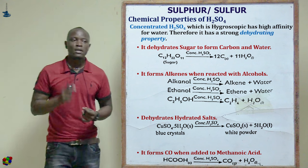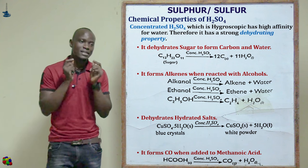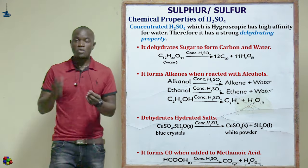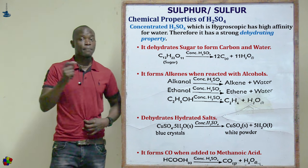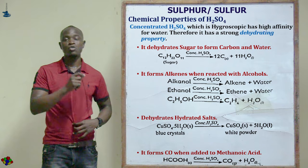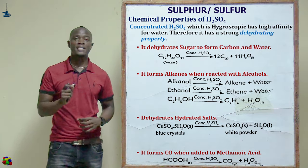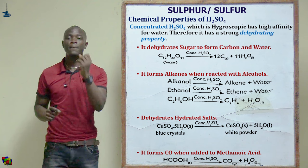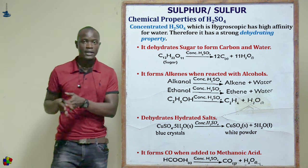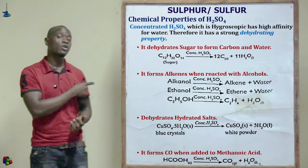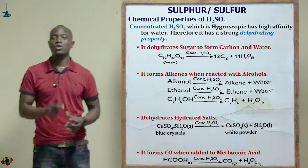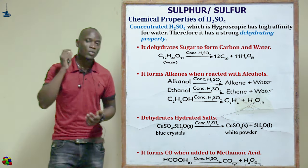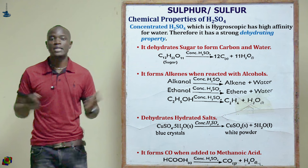When concentrated sulfuric acid is added to sugar, the sugar crystals turn from white to a black mass of carbon. This is because the concentrated sulfuric acid dehydrates the sugar — removing all the water it contains — to form a black mass of carbon and water molecules: C₁₂H₂₂O₁₁ + H₂SO₄(conc.) → 12C(s) + 11H₂O.